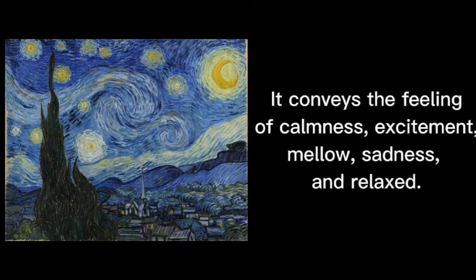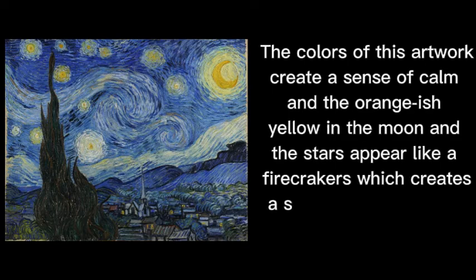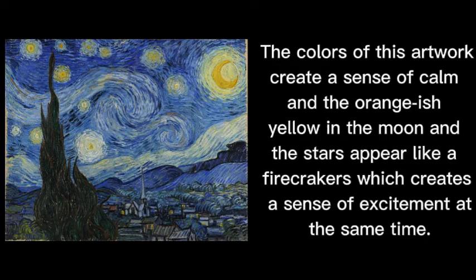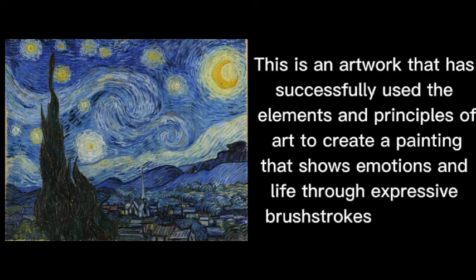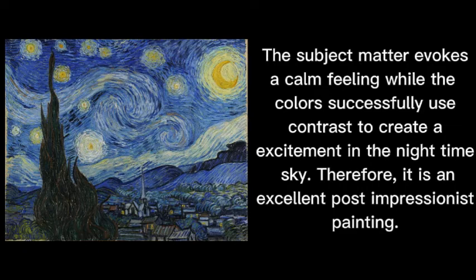The colors of this artwork create a sense of calm, and the orange-ish yellow in the moon and the stars appear like firecrackers, which creates a sense of excitement at the same time. The lines and waves of the colors used also add to the calmness of this artwork, reminding one of the waves of the sea. This is an artwork that has successfully used the elements and principles of art to create a painting that shows emotions and life through expressive brush strokes and colors. The subject matter evokes a calm feeling while the colors successfully use contrast to create excitement in the nighttime sky. Therefore, it is an excellent post-impressionist painting.